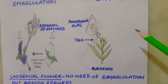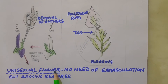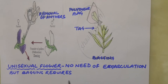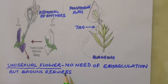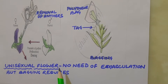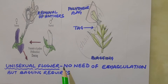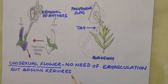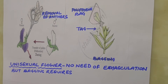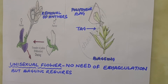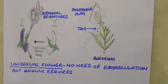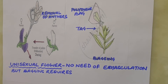If the female parent produces unisexual flowers, there is no need for emasculation. The female flower buds are bagged before the flowers open. Bagging is still needed to prevent the stigma from unwanted pollen. When the stigma becomes receptive, pollination is carried out using the desired pollen and the flowers re-bagged.